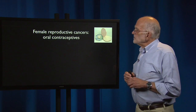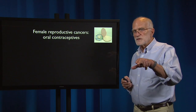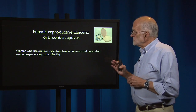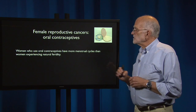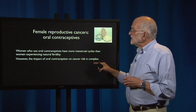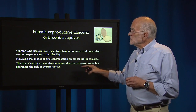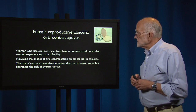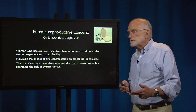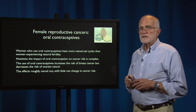Female reproductive cancers do have an association with oral contraceptives, but it is complex and nuanced. Women who use oral contraceptives have more menstrual cycles than women experiencing natural fertility. However, the impact is complicated: oral contraceptives increase the risk of breast cancer but at the same time decrease the risk of ovarian cancer, and the effects roughly cancel out with little net change in overall cancer risk.